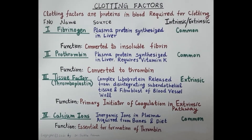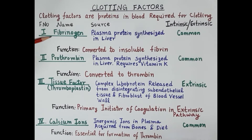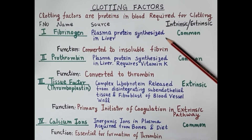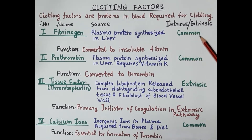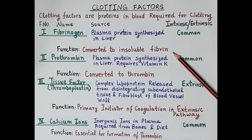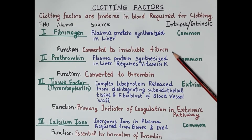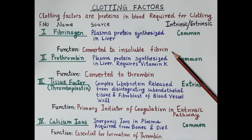The first clotting factor is fibrinogen. Fibrinogen is a soluble plasma protein synthesized in the liver, and it is common for both the intrinsic and extrinsic pathways. Regarding its function, soluble fibrinogen is converted to insoluble fibrin. The fibrin monomers form a fibrin mesh network which entangles platelets, blood cells, and plasma proteins, finally forming a clot.